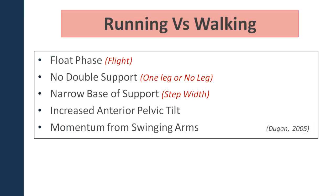It's important to understand the key differences between running and walking gait. The first key difference is that running has a phase called the float phase or flight phase, which occurs twice during the running gait. The float phase is where both legs are not in contact with the ground, which doesn't happen in walking. In walking, you have a period of double support where both feet are on the ground, which doesn't happen in running. Therefore, running can be defined as either one leg or no leg striking the ground.